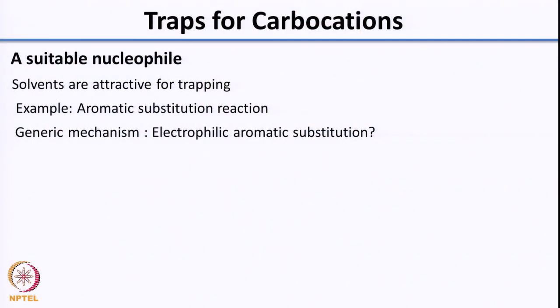Now let us look at traps for positively charged intermediates such as carbocations. Just like we had electrophilic traps for carbanions and other negatively charged intermediates, for positively charged intermediates you would use something nucleophilic. Solvents are very attractive — if you have solvents like acetic acid or ethanol, they are also nucleophilic, and if it is a solvent it is obviously in excess. Remember I told you that the trap is sometimes used in high concentration so that there is enough chance for it to interact with the intermediate.